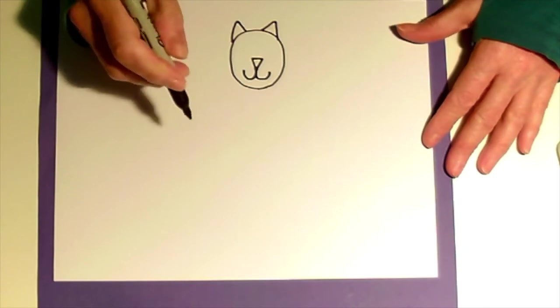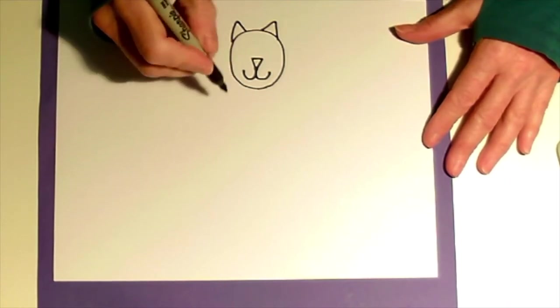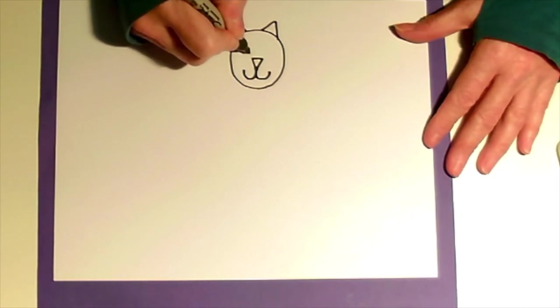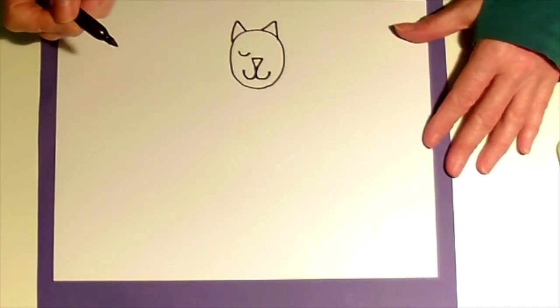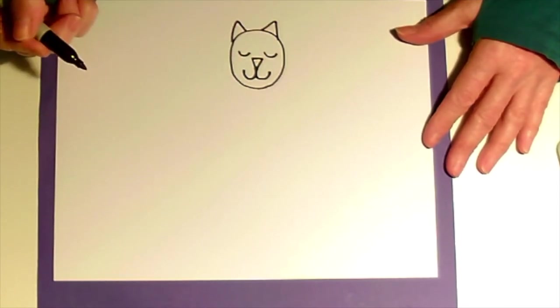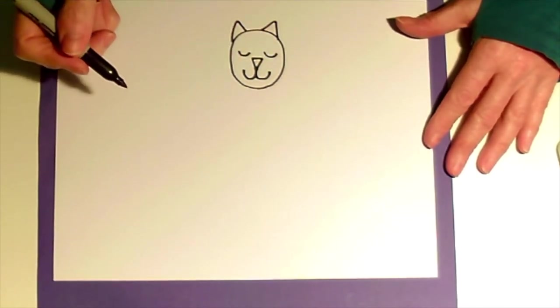And then for the eyes you can do just a smile expression on one side and a smile on the other. Now your kitty cat looks like it's asleep.